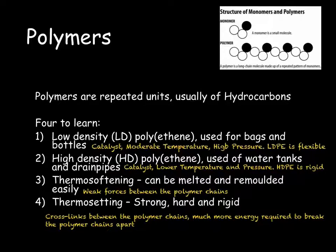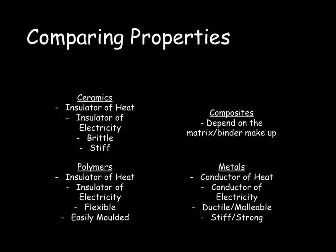On the next slide we will compare these materials as well as comparing them to metals. The three different types of new materials, plus metals, have different properties and therefore different uses. Ceramics — for example glass and clay — are insulators of both heat and electricity. They are brittle and stiff, so they are not flexible and they break easily. Polymers are also insulators of heat and electricity, however they are much more flexible and easily moulded. We can use polymers for clothing and as an insulator in electrical items. The properties of composites depend on the matrix and binder, so their properties will differ depending on the type of composite: fibreglass, carbon fibre, concrete, or wood.